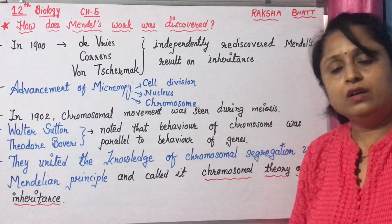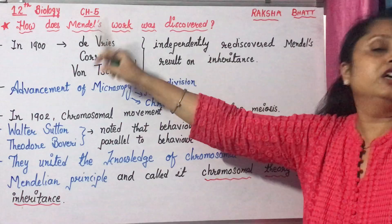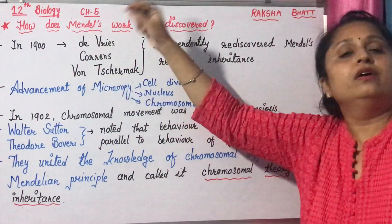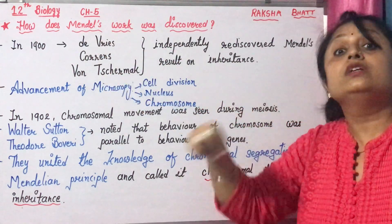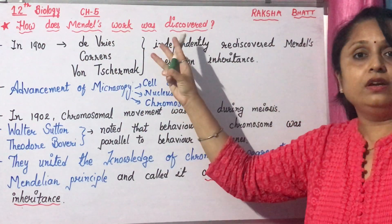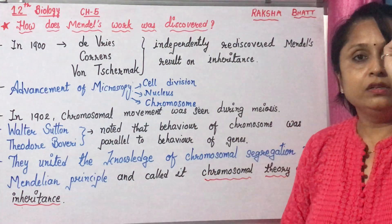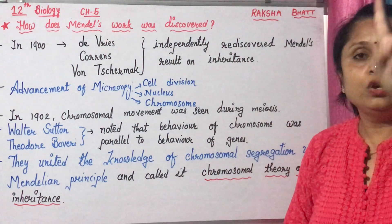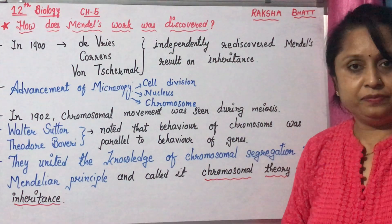After his death, in 1900, he finally got credit. Who gave him credit? Three great scientists: De Vries, Correns, and Von Tschermak.